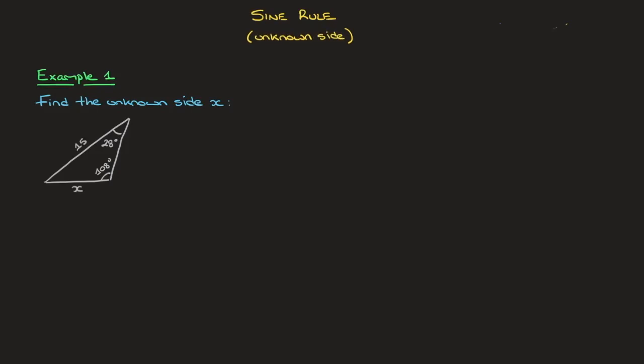We now learn about the sine rule. In particular, we learn about the sine rule for finding an unknown side length in a triangle. Now, in a minute, we're going to work through a couple of examples, the first of which you see here. But before doing so, let me either introduce you to or remind you of the sine rule.